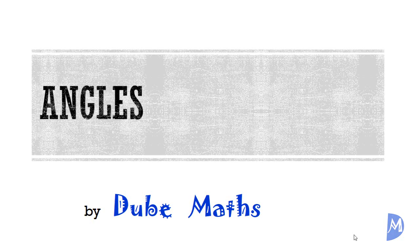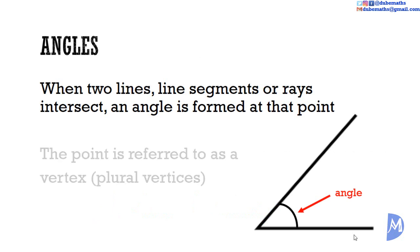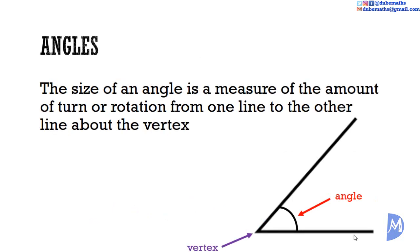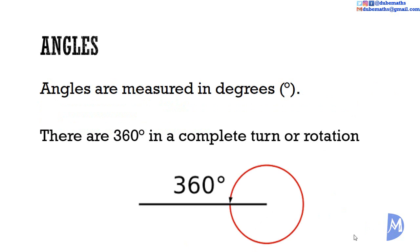Where two lines, line segments, or rays intersect, an angle is formed at that point. The point is referred to as a vertex. The size of an angle is a measure of the amount of turn or rotation from one line to the other about the vertex. Angles are measured in degrees. There are 360 degrees in a complete turn or rotation.